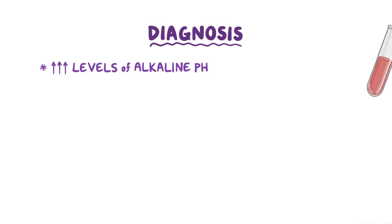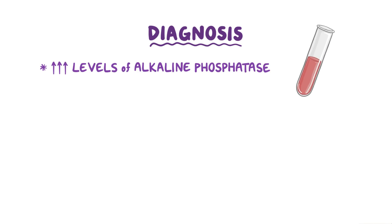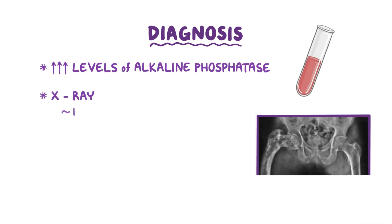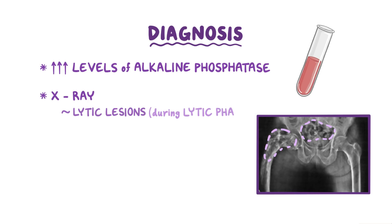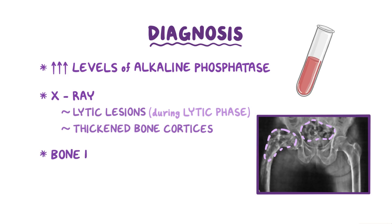The diagnosis of Paget's disease of bone is usually done by checking for elevated levels of alkaline phosphatase. In addition, an x-ray might show lytic lesions during the lytic phase of the disease, or thickened bone cortices in advanced cases. Finally, a bone biopsy is usually done to exclude malignancies, which can mimic some of the findings of Paget's disease of bone.